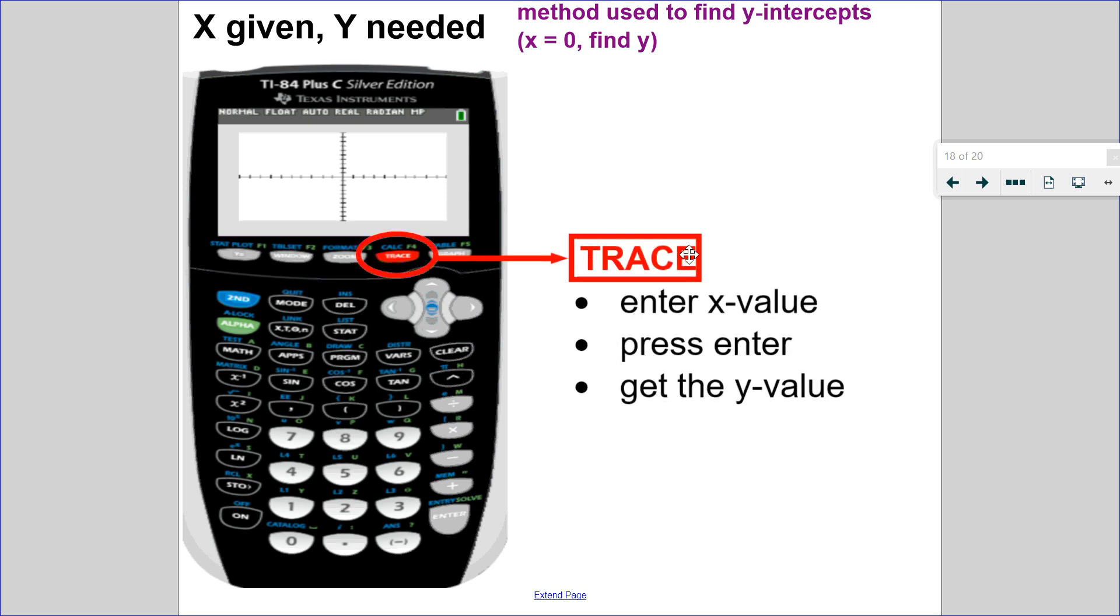So the way that we do that is with our trace key. So the trace key says, if you give me x, I will give you y. So you hit the trace key, enter whatever x value that you're wanting, press enter, and you will get the y value that goes with it.